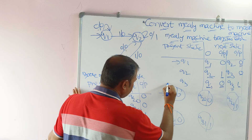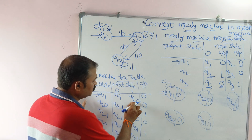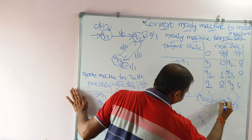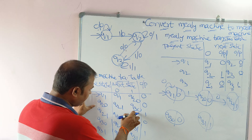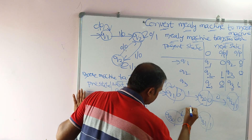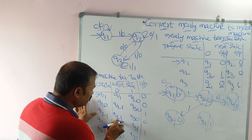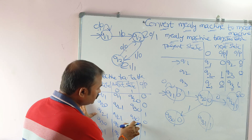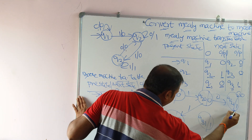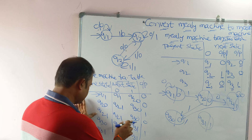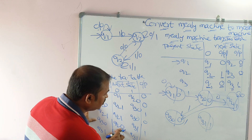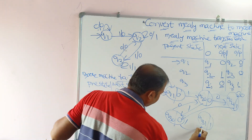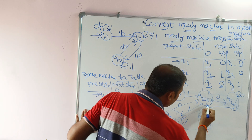Now drawing the transitions: q1 on zero goes to q1 (self loop). q1 on one goes to q20. q20 on zero goes to q21. q20 on one goes to q30. q21 on zero goes to q21 (self loop). q21 on one goes to q30. q30 on zero goes to q20. q30 on one goes to q31. q31 on zero goes to q20.